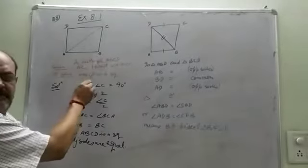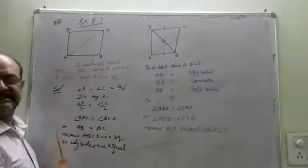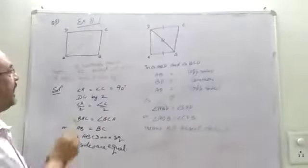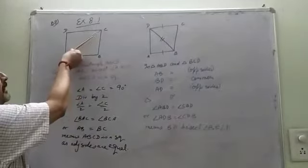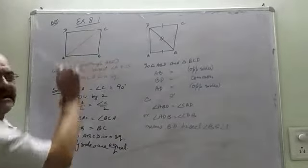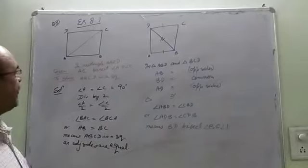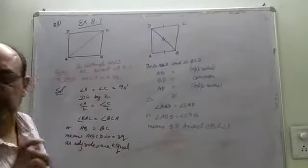They have given ABCD is a rectangle and AC bisect angle A and angle C. We have to prove ABCD is a square.